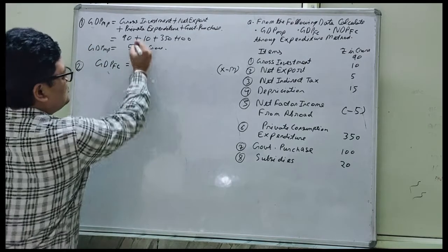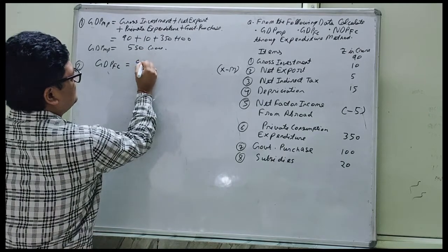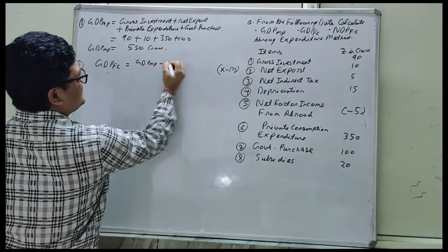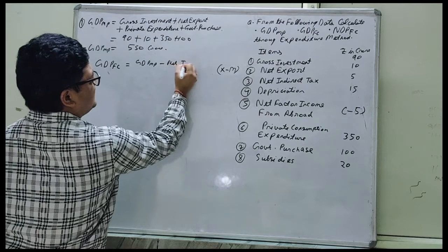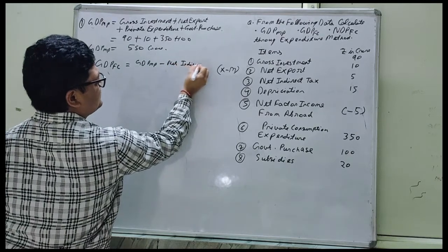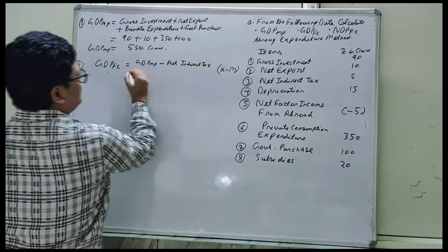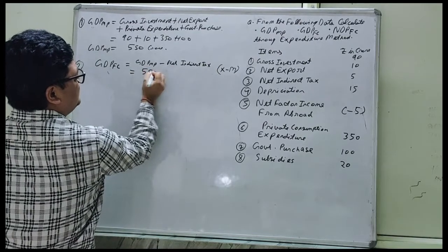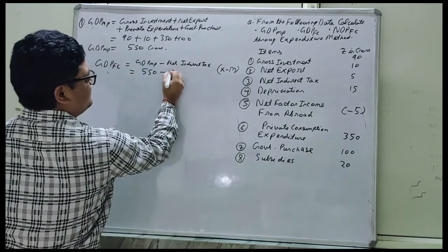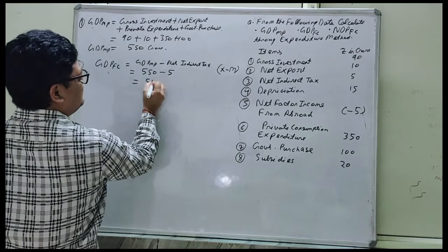We have to just deduct the indirect tax. So GDP MP minus net indirect tax, it will become 550 less 5, 545.